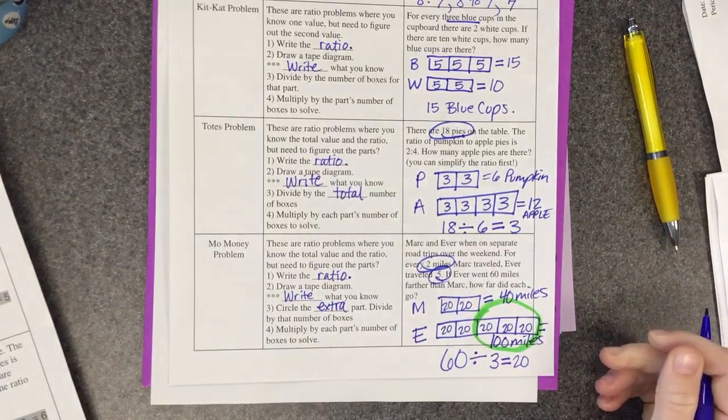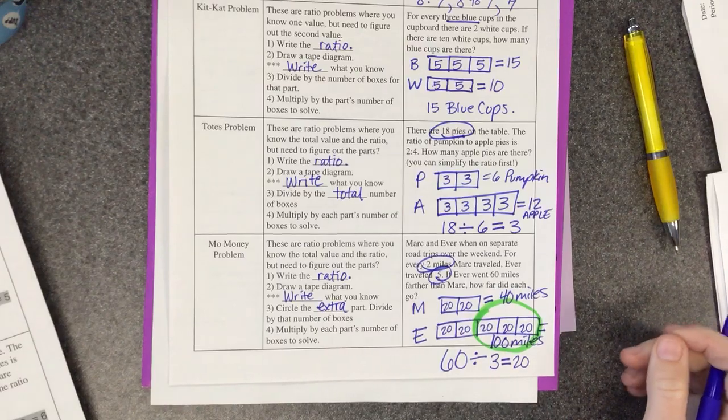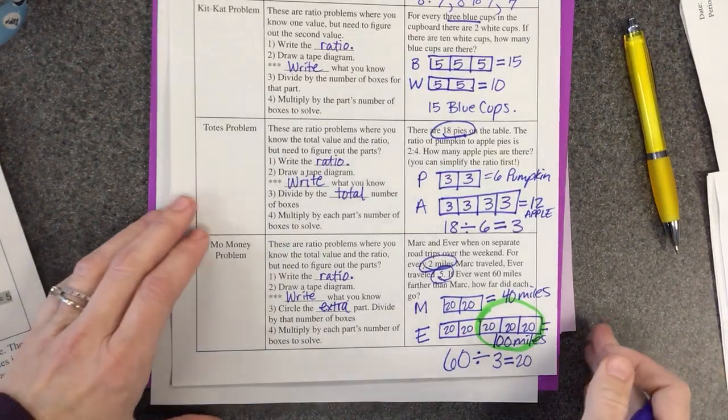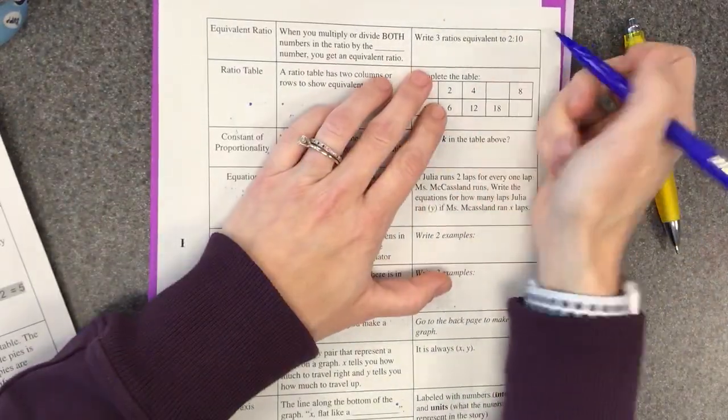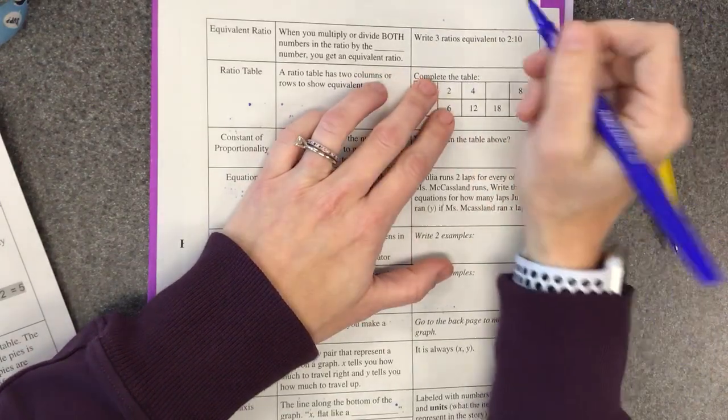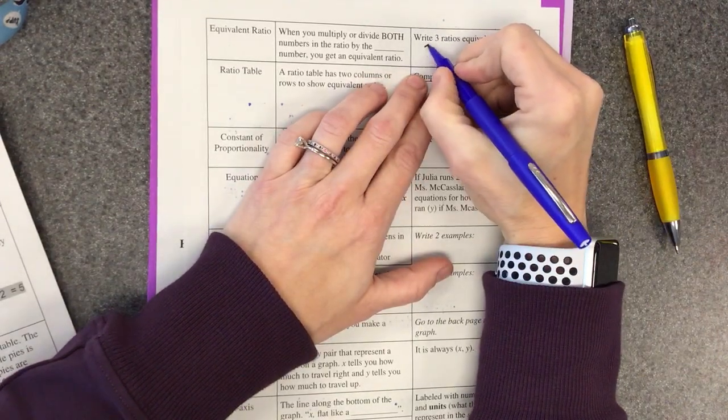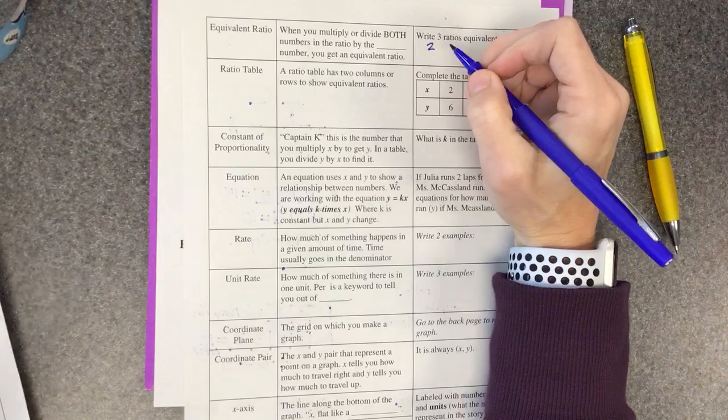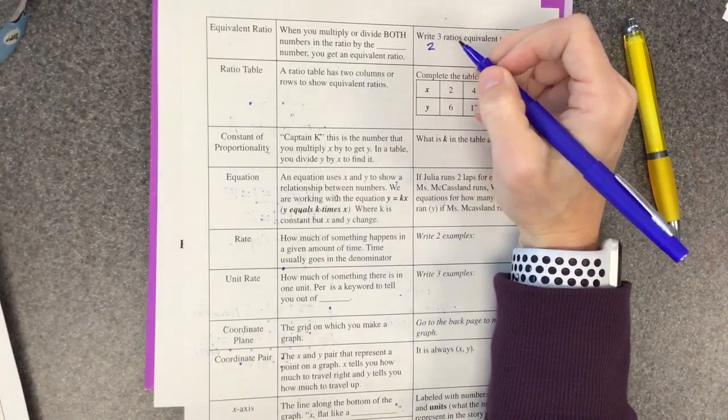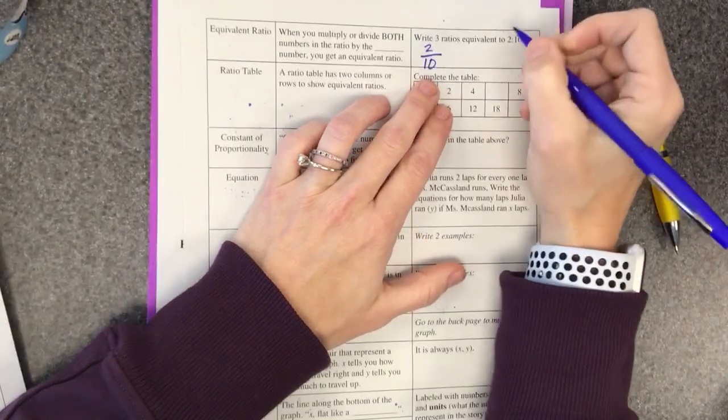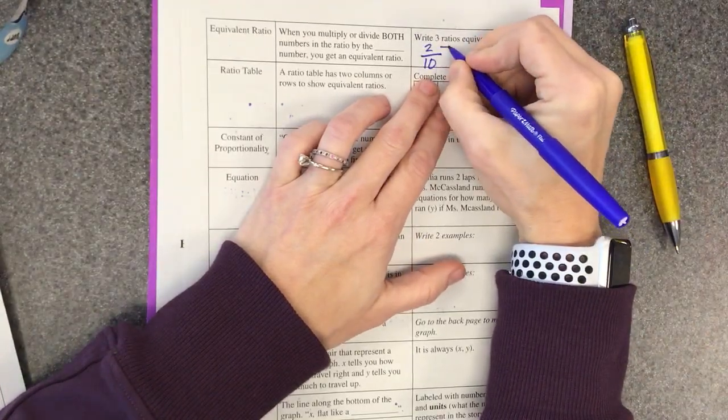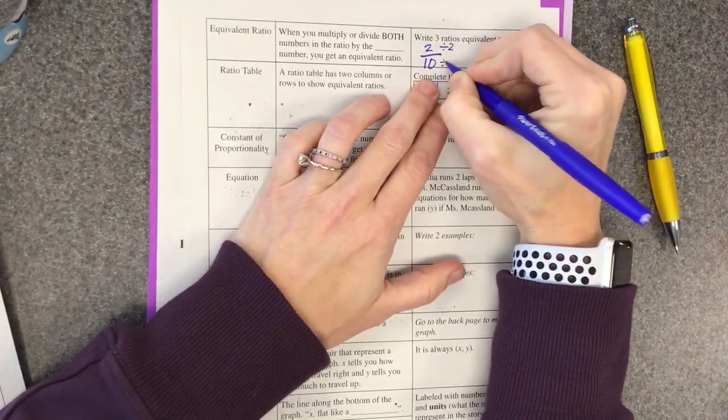All right, now, write three ratios that are equivalent. So here we go, we're gonna write two. I'm gonna just write this as a fraction, two over ten, right. Now let's reduce that. Let's divide both by two. So two divided by two is uno, uno, ten divided by two is five, five, good job. Now this is equivalent or equal, equal.